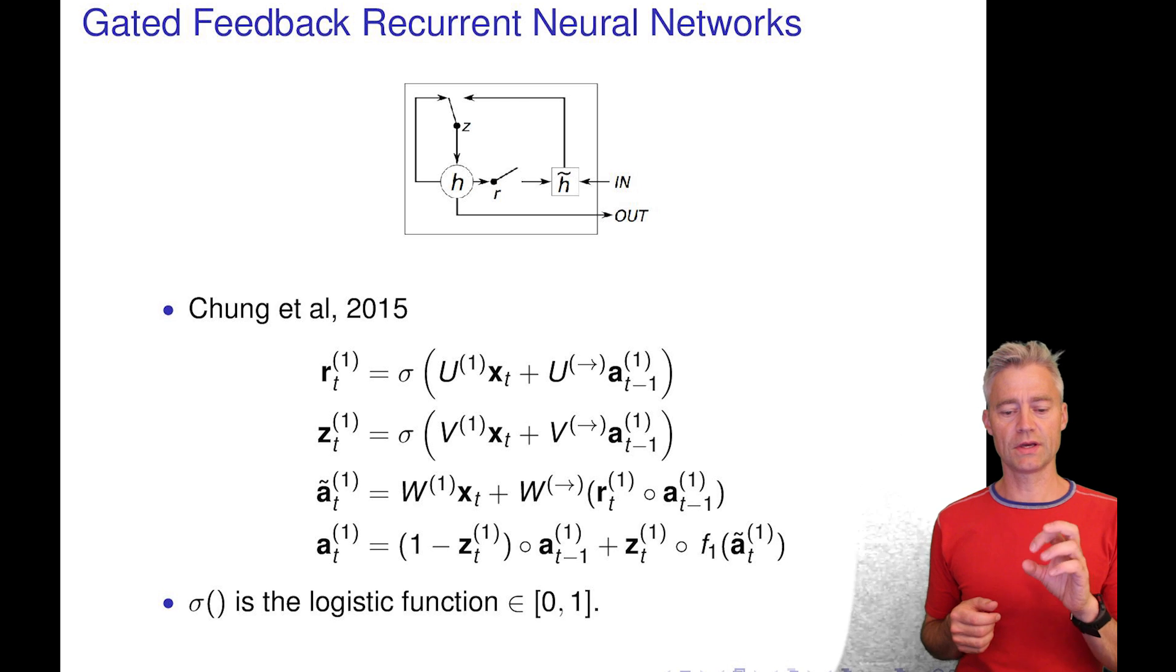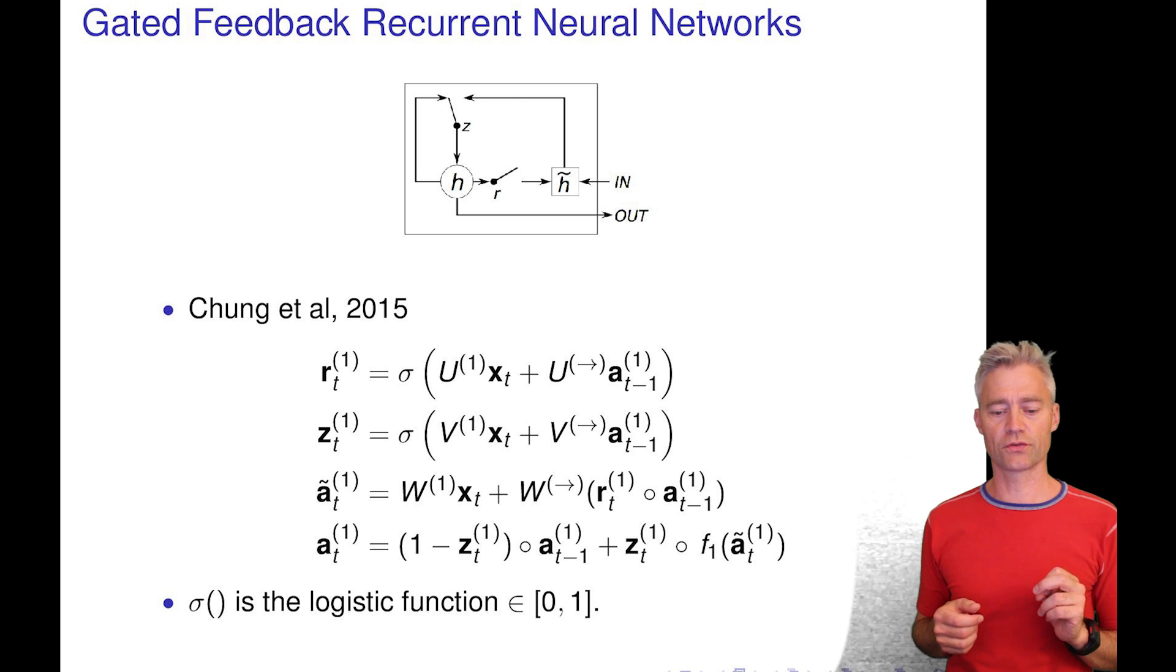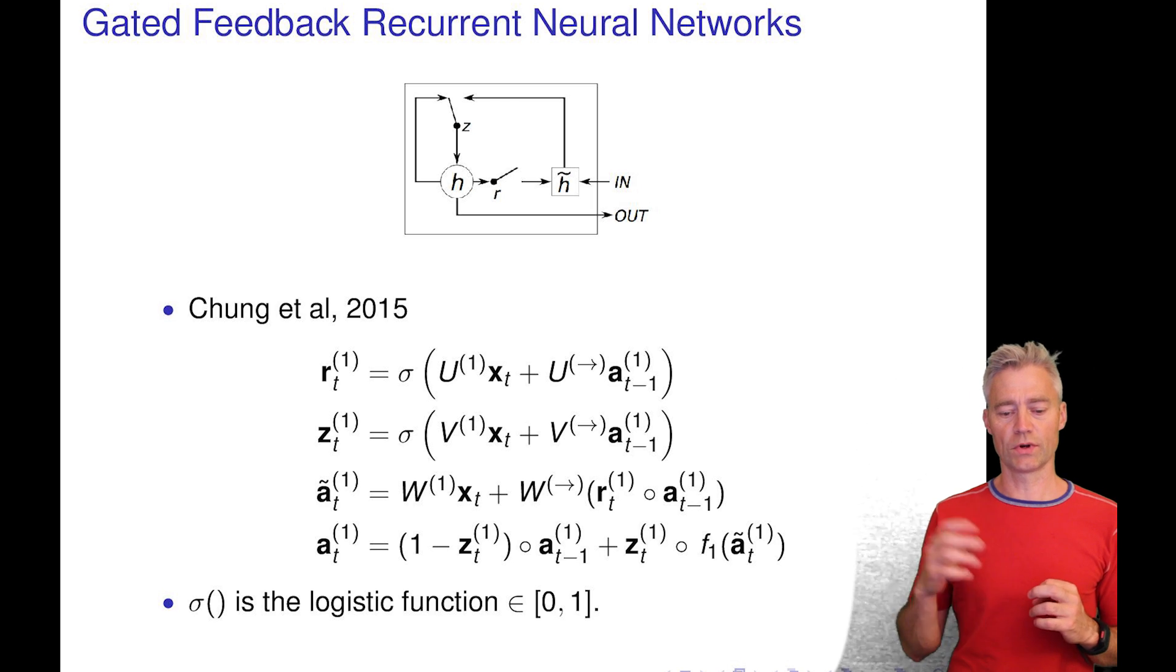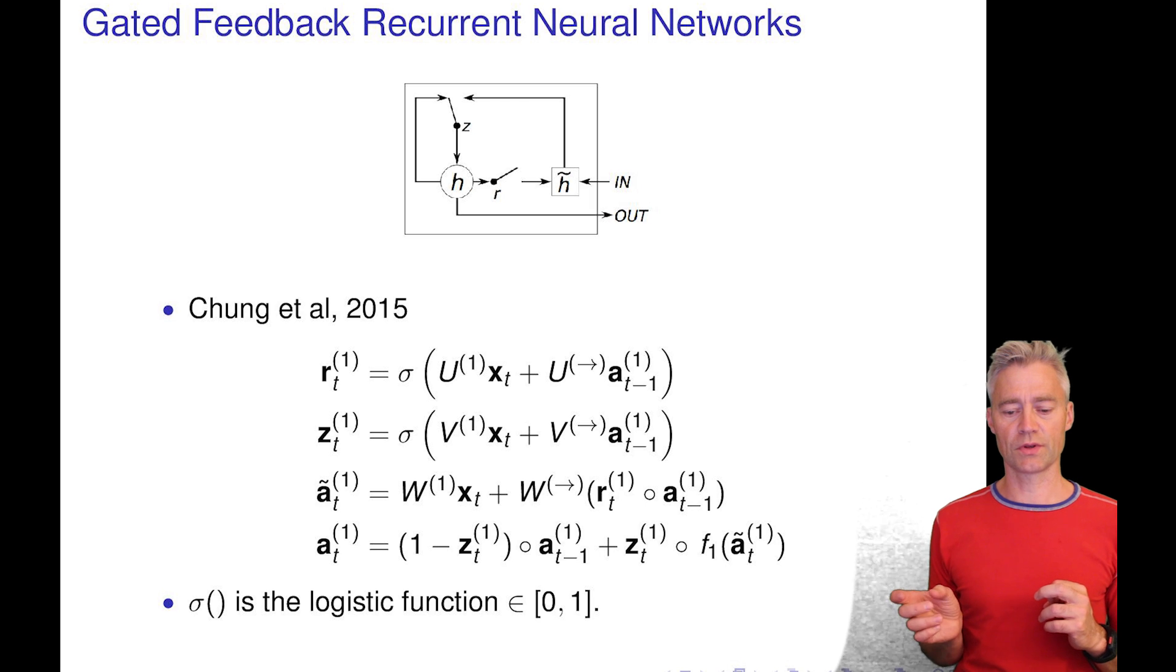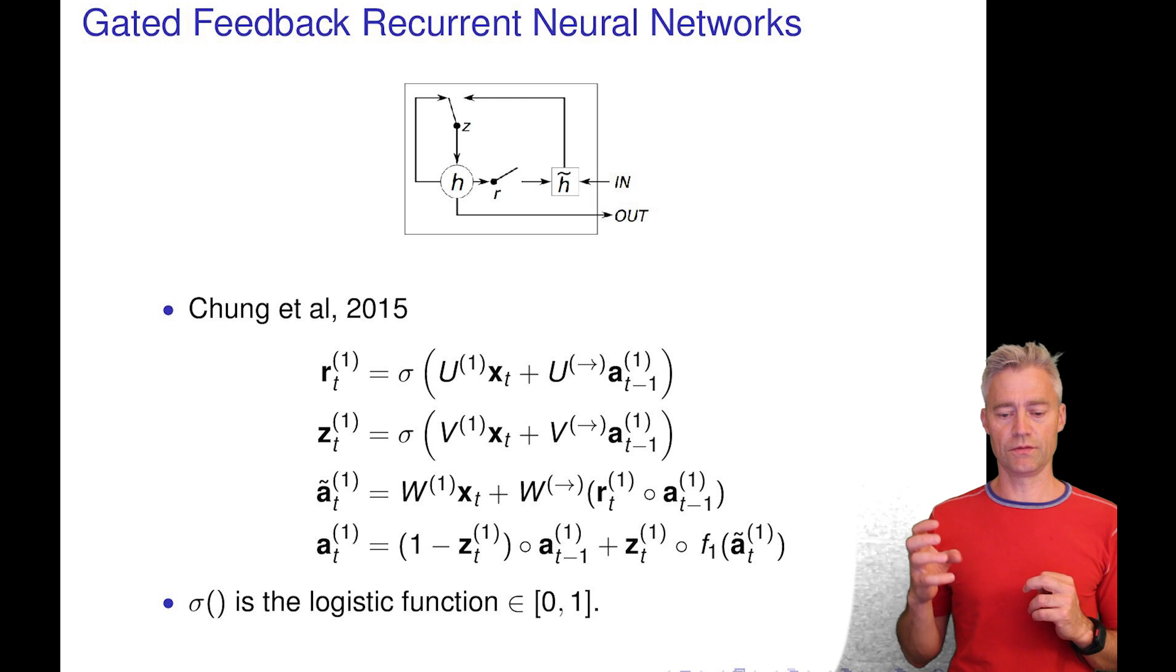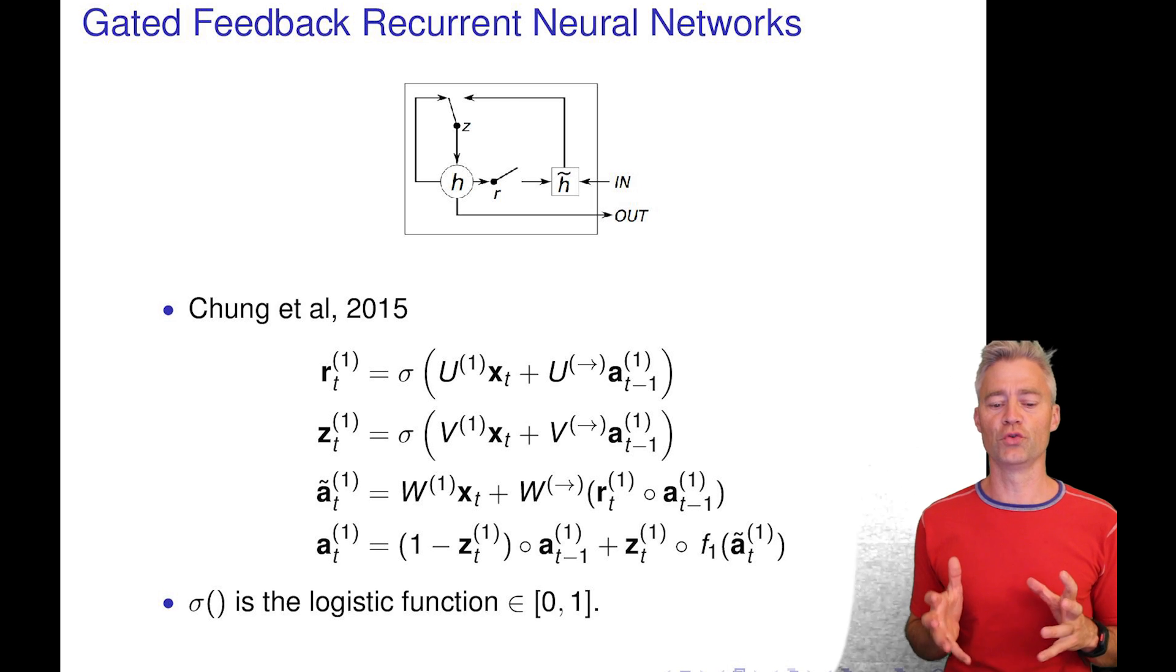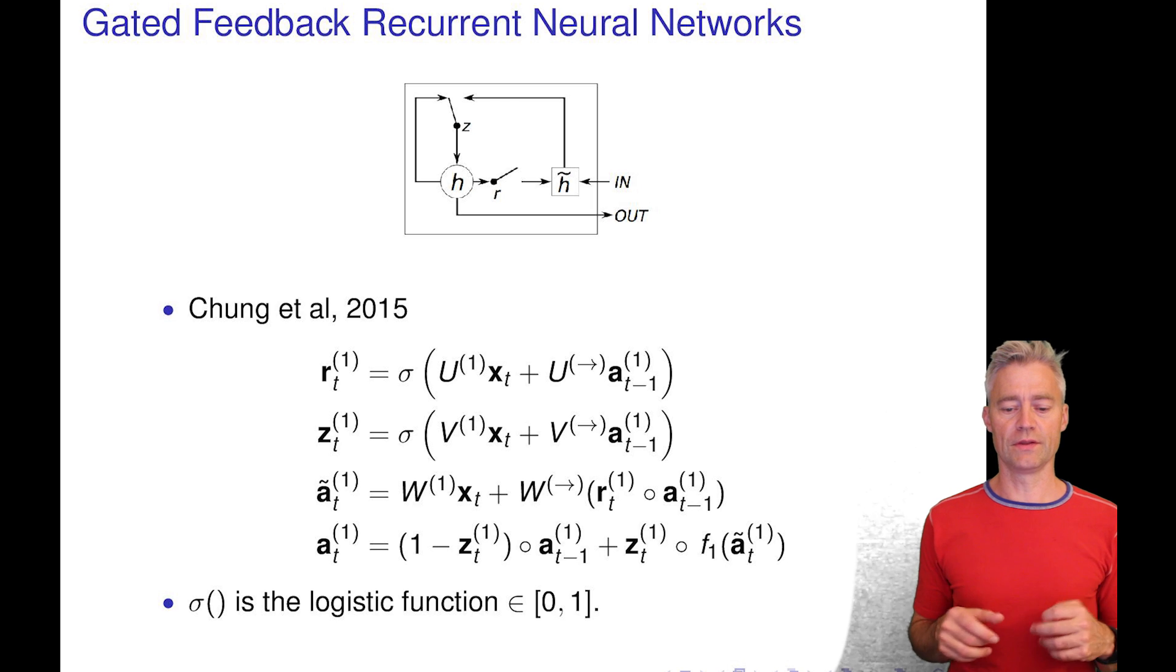The C gate decides whether you actually just retain - if the C gate is zero, then you retain the value from the previous time step. And if it's one, then you actually update it with this A tilde, which you compute partially from the input data from that time and then from a gated value from the previous time step.